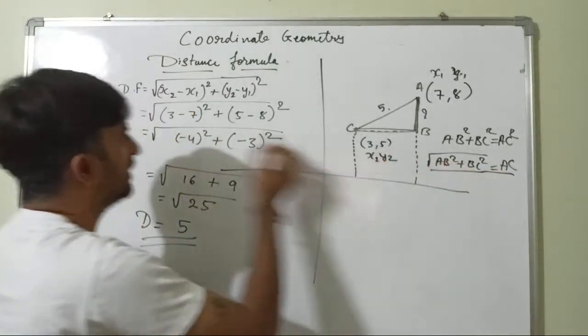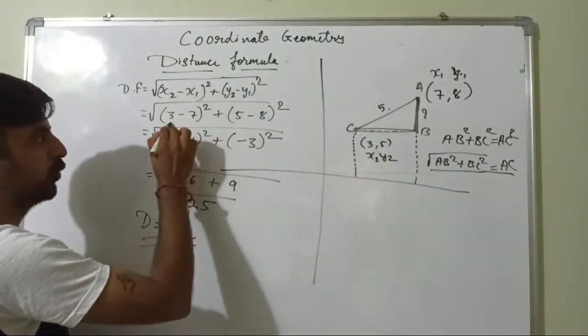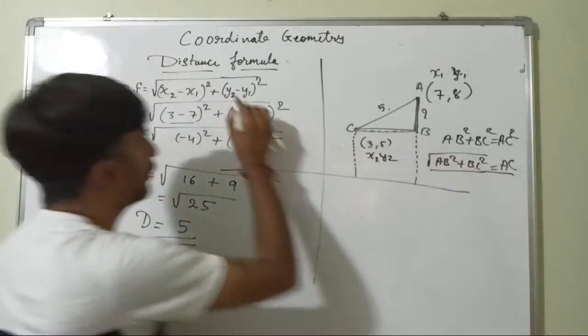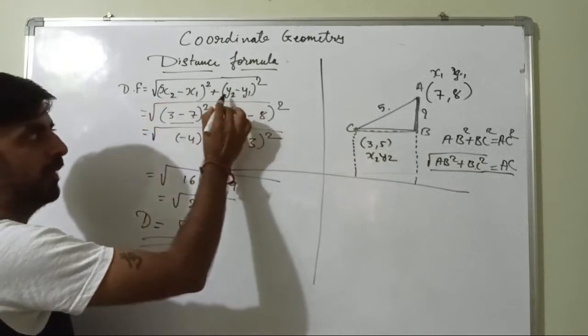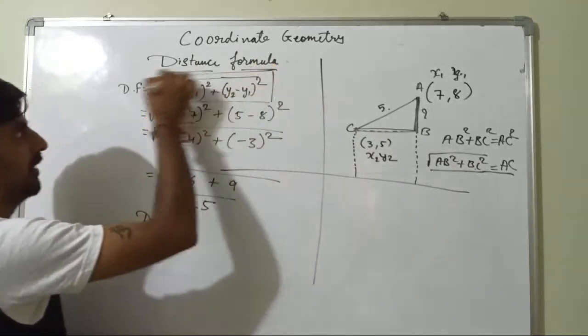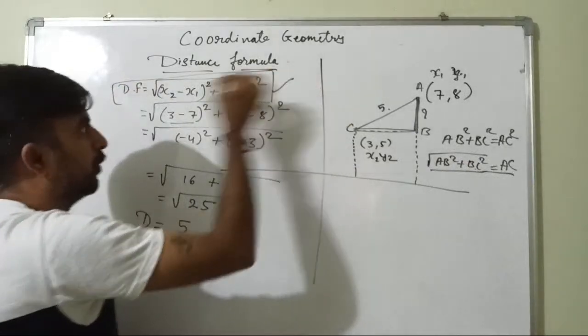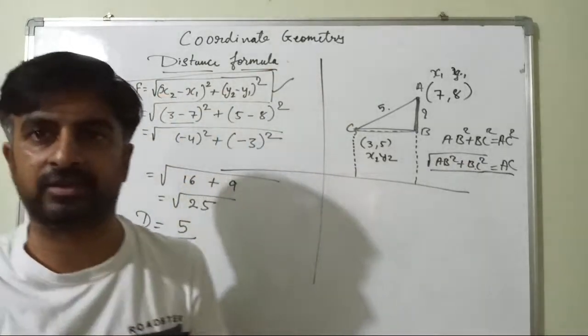Here also we have done the same thing. But how we will get a, b square? x2 minus x1 is whole square and b, c square y2 minus y1. Or you can take x1 minus x2 also, y1 minus y2 also. But this is given in your textbook and everywhere, so we have to follow x2 minus x1 only guys.